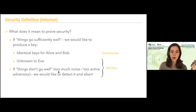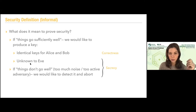If we abort, obviously there is no key, so everything is fine. If we don't abort, then we want the key to be unknown to Eve. The combination of these two things is secrecy. Correctness and secrecy together — this is what we call the soundness of the protocol.